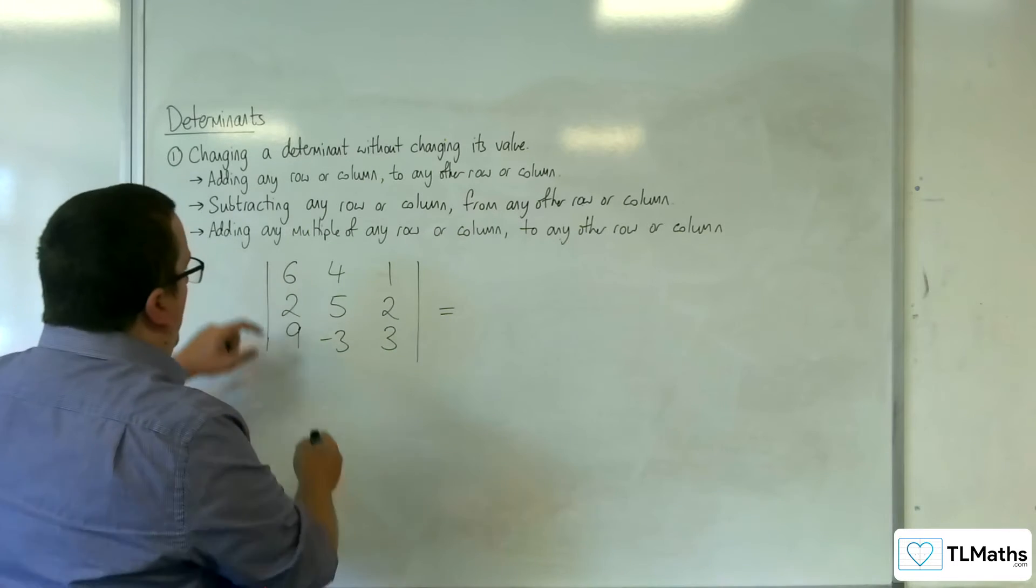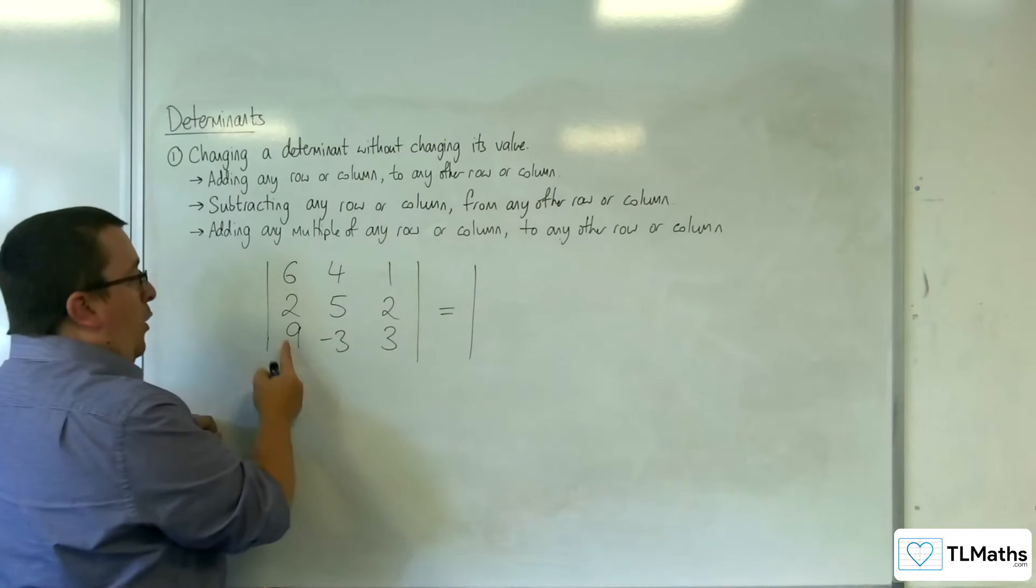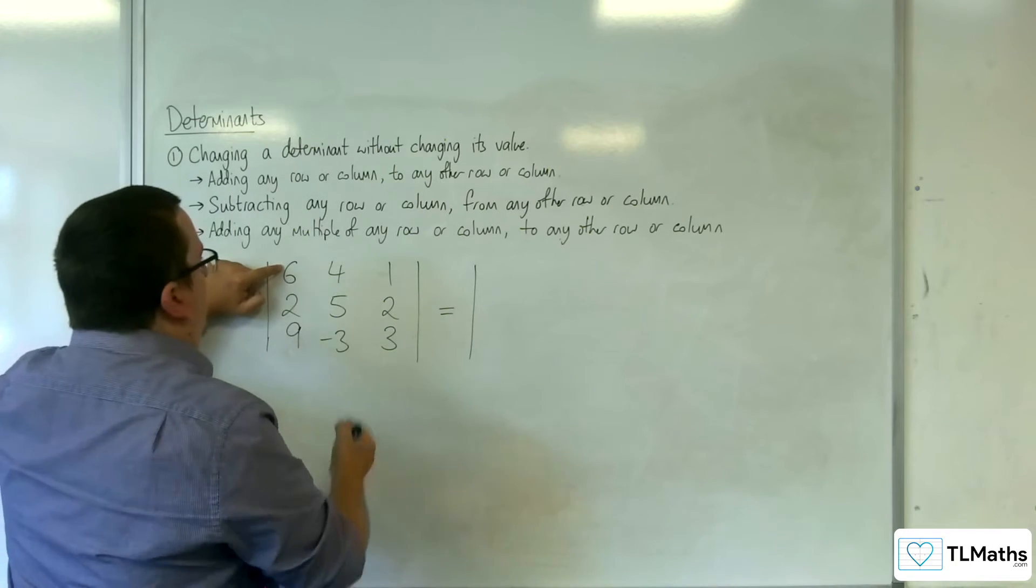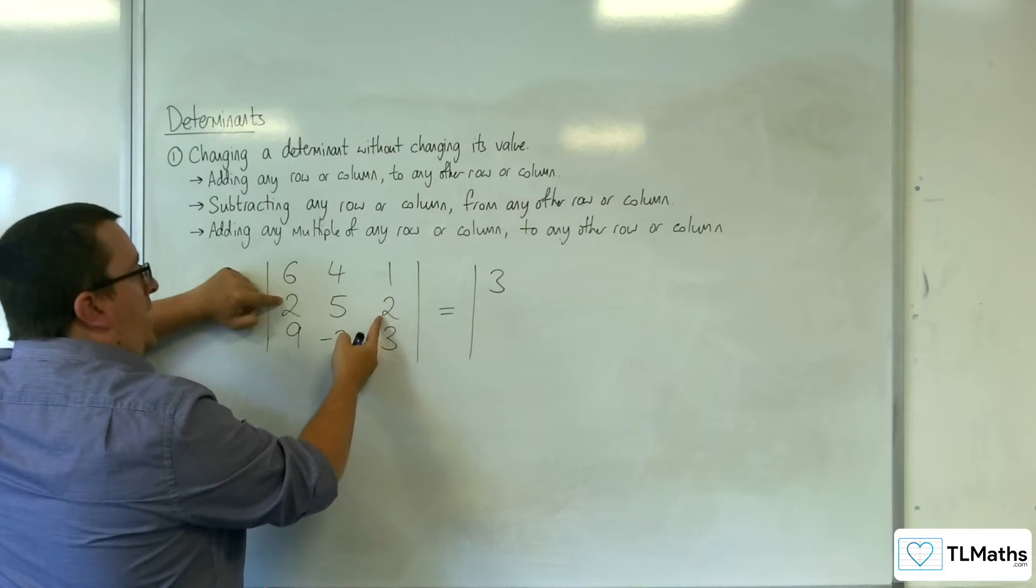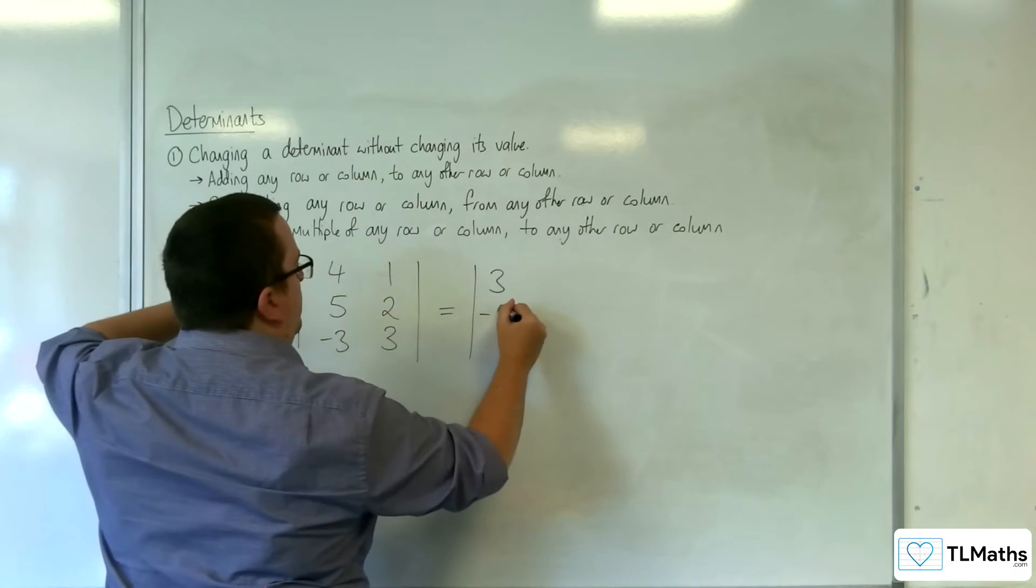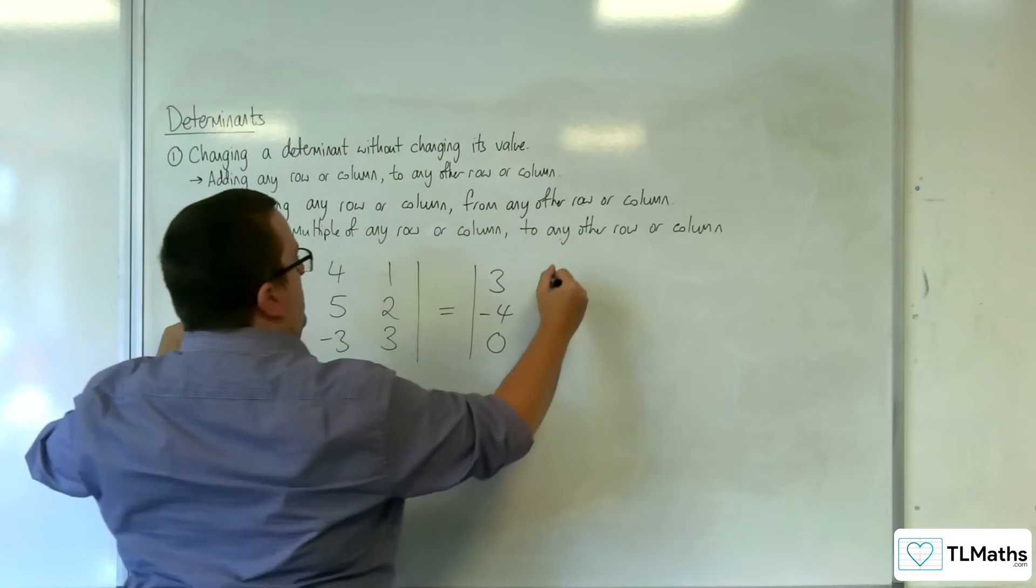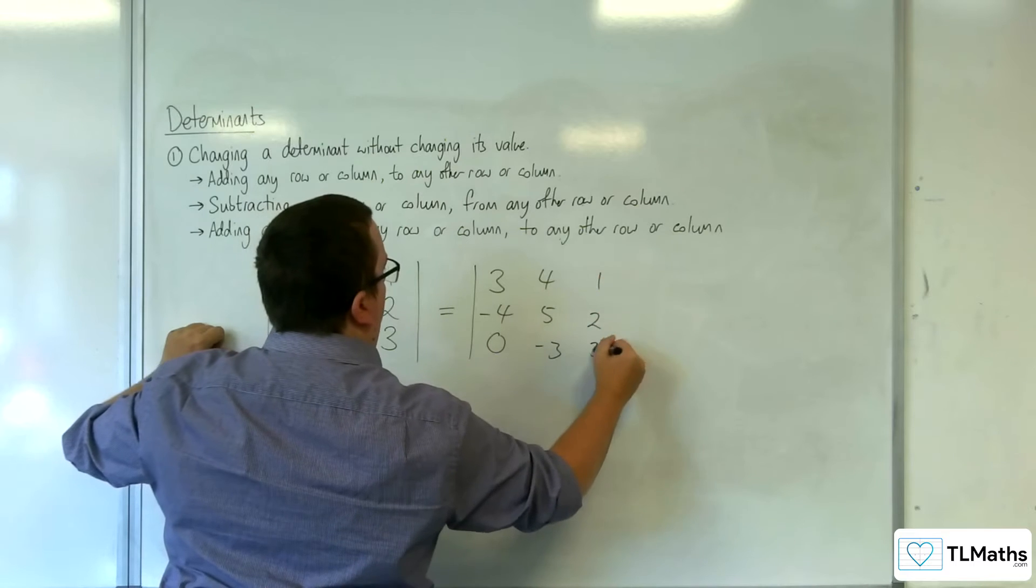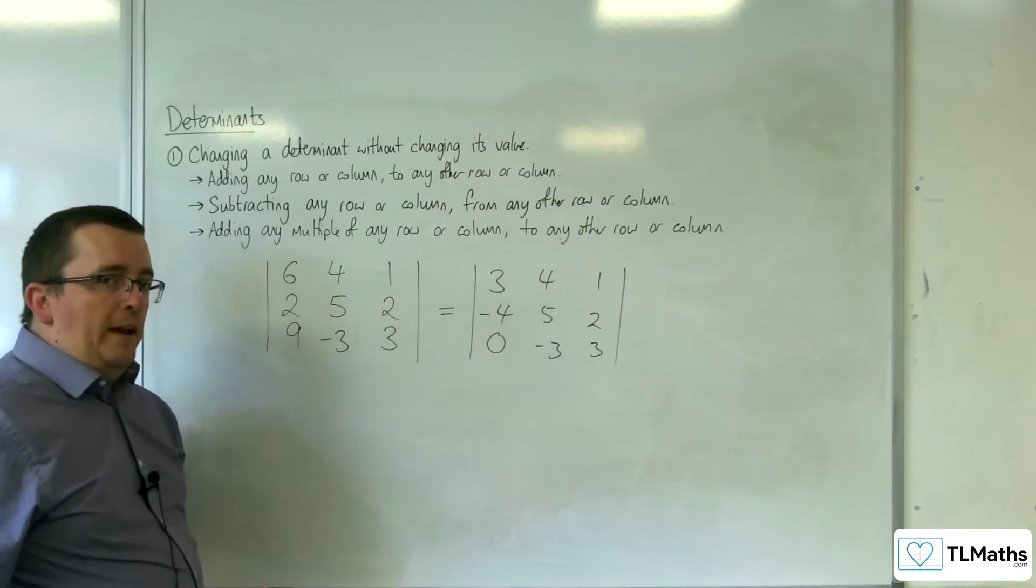So I can do column 1, the new column 1 is going to be the old column 1 takeaway 3 lots of column 3. So I'm going to have 6 takeaway 3, so 3, 2 takeaway 6, which is minus 4, and then 9 takeaway 9, so 0. And then 4, 5 minus 3, 1, 2, 3. And I've simplified the determinant down.